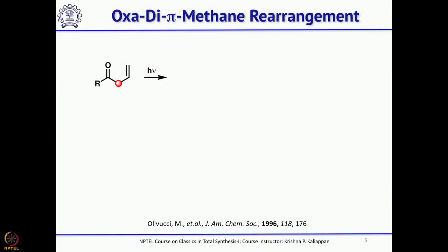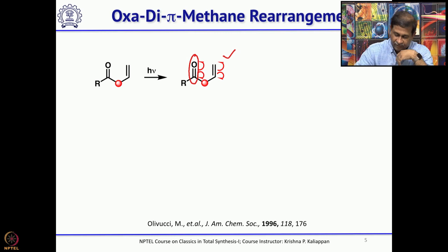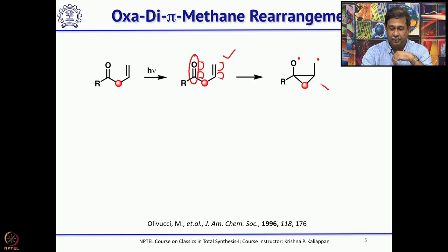The starting material is 2-methylcyclopentane-1,3-dione, which is commercially available. Before going into the details of the total synthesis reported by Demuth, we will discuss the key reaction: oxa-di-pi-methane rearrangement. If you have an allyl ketone system, under photochemical conditions, the carbonyl will form a diradical, the same will happen with the double bond, and that can lead to the formation of a cyclopropane.